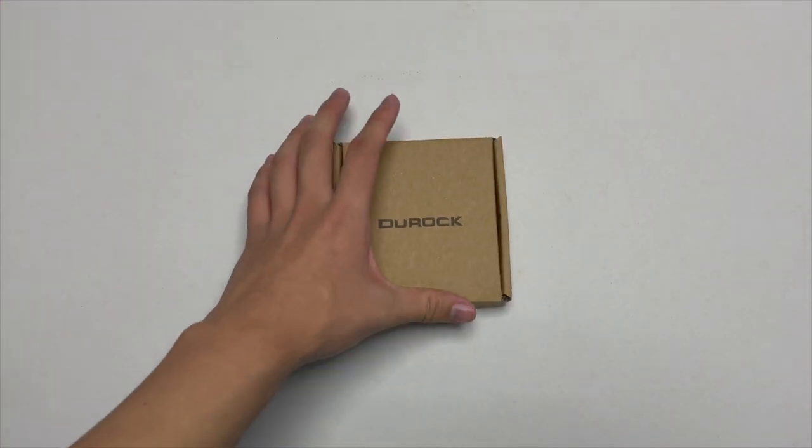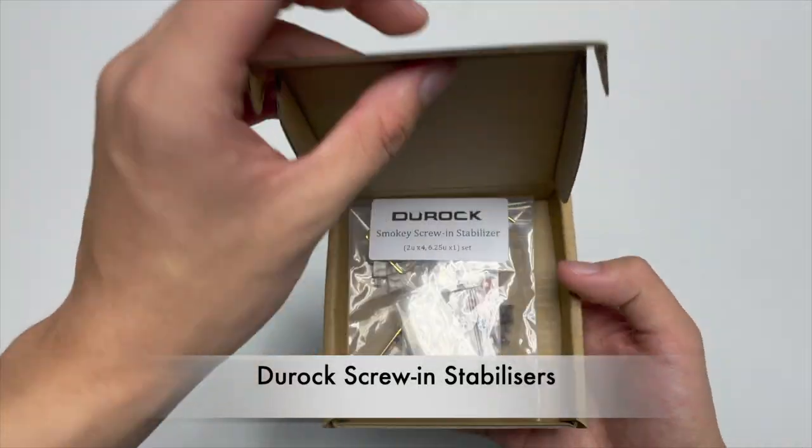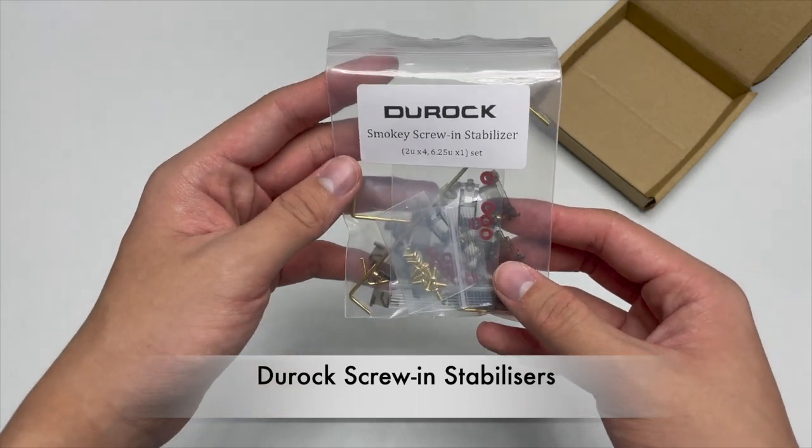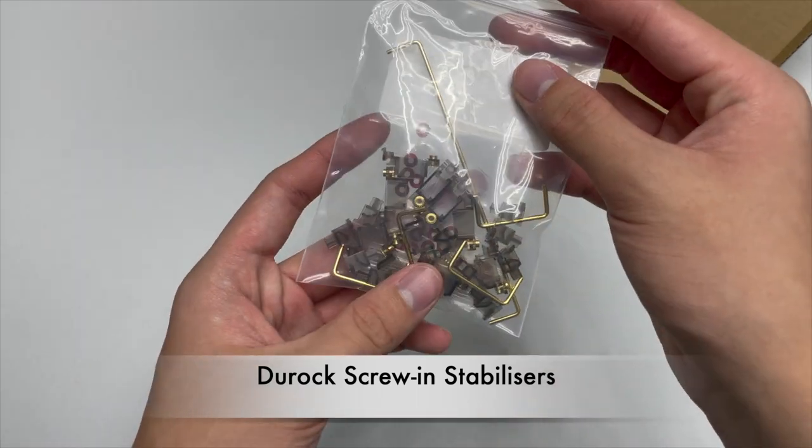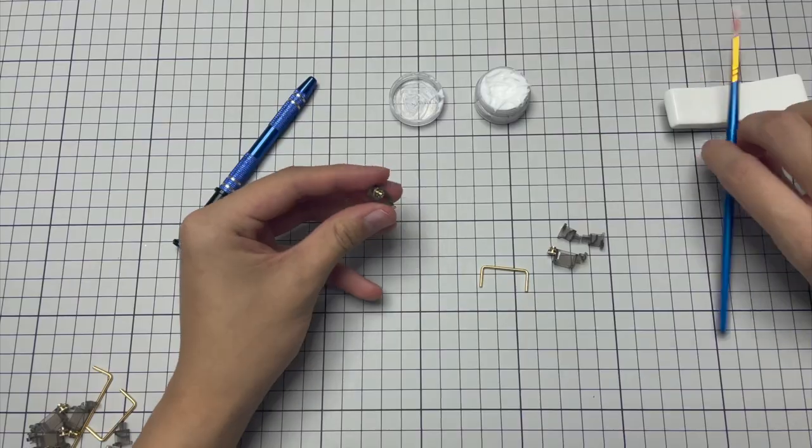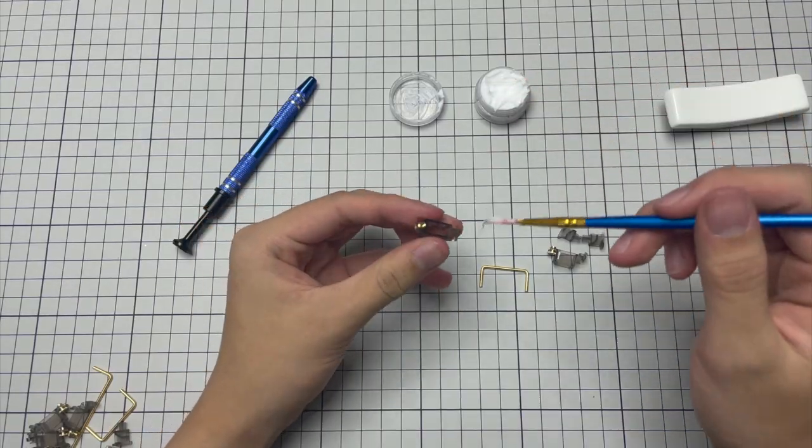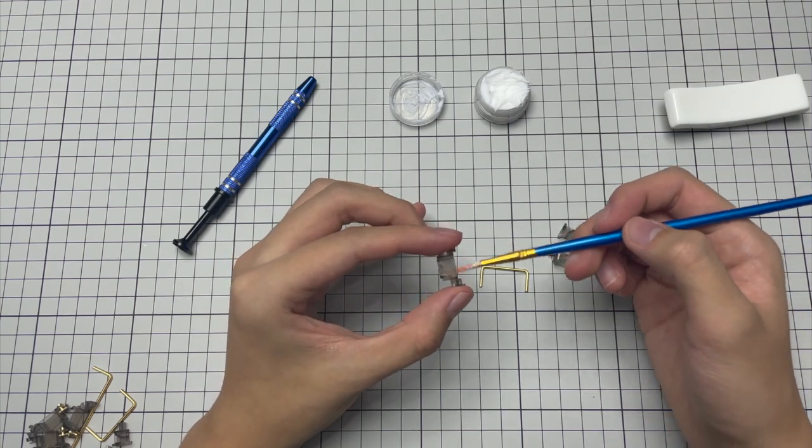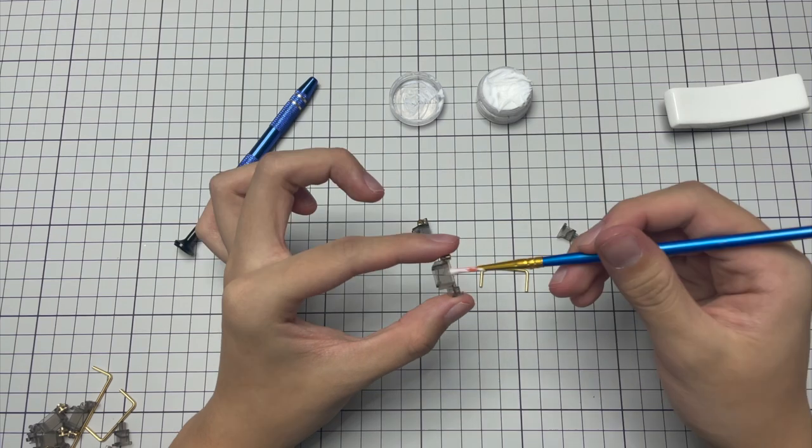Along with the switches, I also got these Durock stabilizers. They are allegedly one of the best so I'm excited to test them out for myself. Moreover, they are also gold and black which matches the aesthetic of the rest of the keyboard. Lubing stabilizers can sometimes be even more important than lubing switches, but are often neglected. And yes, lubing stabilizers are the same concept as lubing switches.